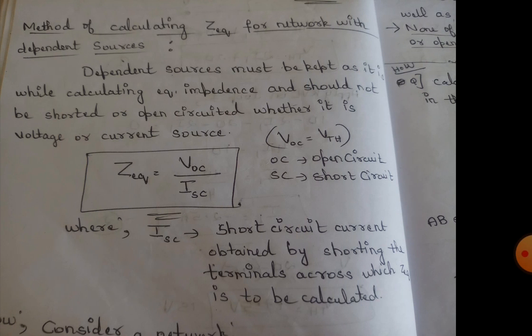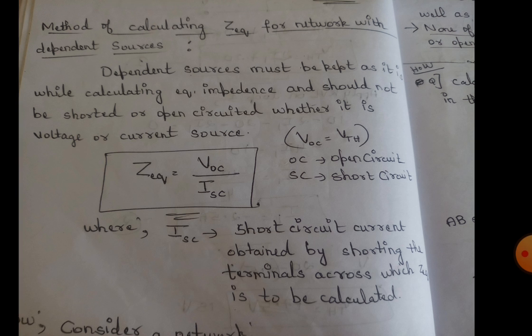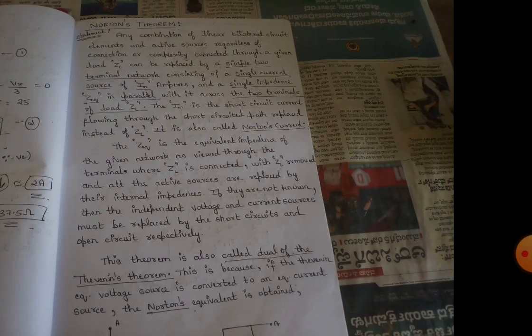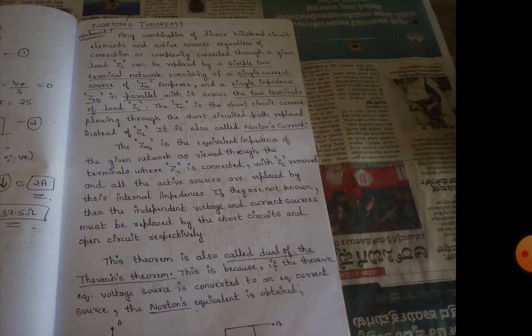For calculating Thevenin's theorem in case of dependent sources, we use the formula Z equivalent = Voc / Isc, where Voc stands for open circuit voltage and Isc stands for short circuit current. We also have Norton's theorem, which is similar to Thevenin's theorem, except in Norton's theorem we calculate the Norton current instead of voltage.